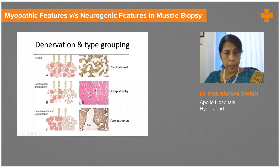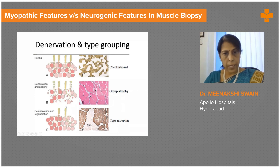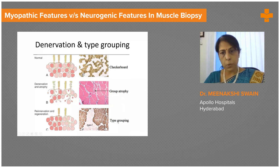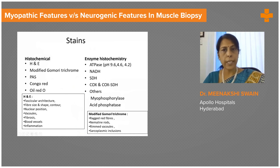What happens in denervation is the nerve gets cut; the muscle fibers supplied by that nerve twig atrophy and become small, causing group atrophy because the entire group supplied by the same nerve twig atrophies. The adjacent nerve then sprouts collaterals and tries to reinnervate these fibers. Since this sprouting nerve typically supplies pale pink fibers, the reinnervated fibers also become pale pink. You then end up with groups of pale fibers and groups of darker fibers — this is type grouping — and together group atrophy and type grouping are the typical features of denervation seen in neurogenic atrophy.